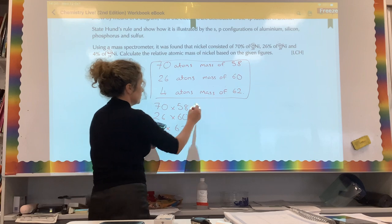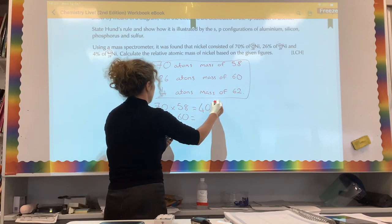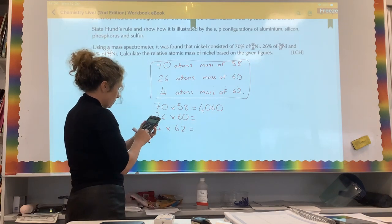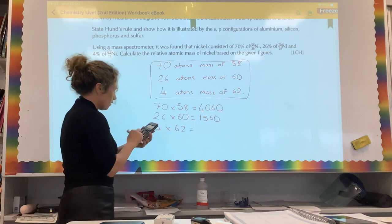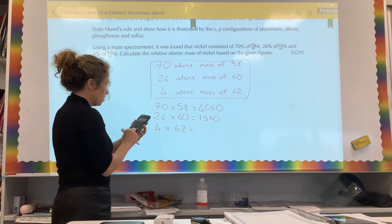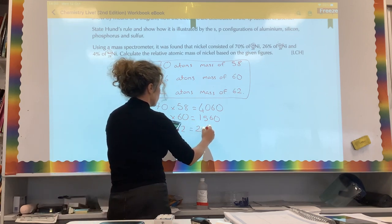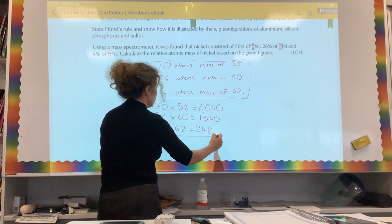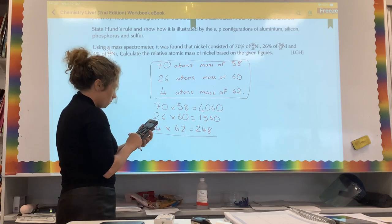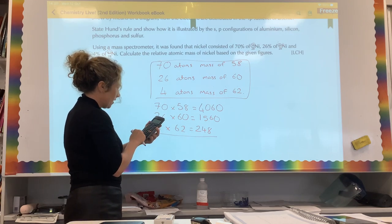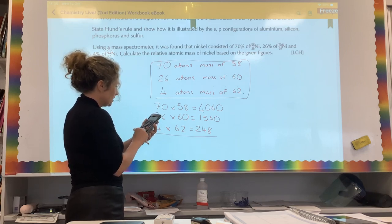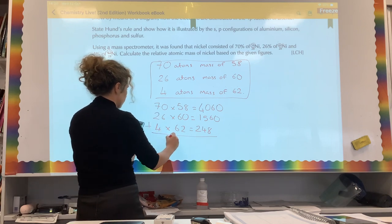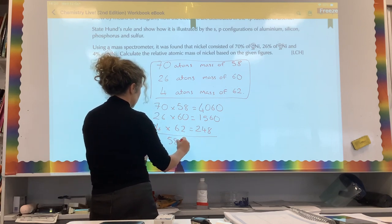So it's going to be 70 by 58, that is 4,060. Then we've got 26 by 60, that is 1,560. And then we've got 4 by 62, which is 248. So we're going to add up these guys. So it's going to be 4,060 plus 1,560 plus 2,480.